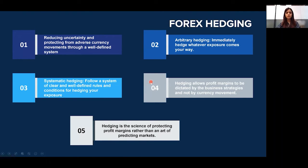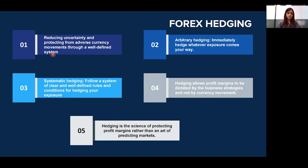Adverse movements in foreign currency can give rise to operational losses and cash flow problems for importers and exporters. The practice of reducing this uncertainty and protecting from adverse currency movements through a well-defined system is known as Forex hedging. Hedging can be done internally or externally — internally by netting exposures or adjusting trade terms, or externally by using derivatives like forwards, futures, options, and swaps.